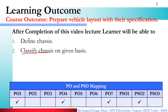Now, PO and PSO mapping. The first PO that is mapped here is basic and discipline-specific knowledge. The topic we are studying is a core topic related to automobile engineering, which is discipline knowledge related to mechanical engineering.